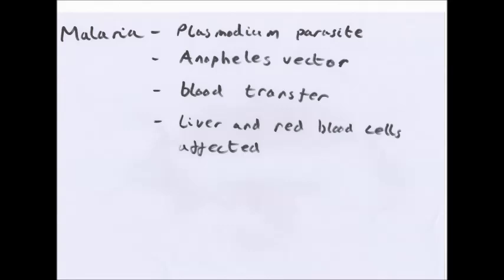Malaria is caused by a eukaryotic organism — it is a protoctista. There are four variants you need to know: plasmodium falciparum, plasmodium vivax, plasmodium ovale, and plasmodium malariae.